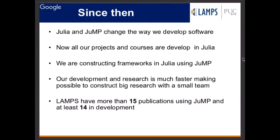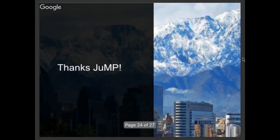To wrap up — what has happened since we started using JuMP? We are much happier. We changed the way we develop software at LAMPS. Now our projects are in Julia, our courses use Julia, and we are trying to give more back to the community by creating frameworks. We are also having very successful products with a small team — we don't need a very specialized developer. Since then, we have more than 15 publications using JuMP and Julia, with at least 14 more in development.